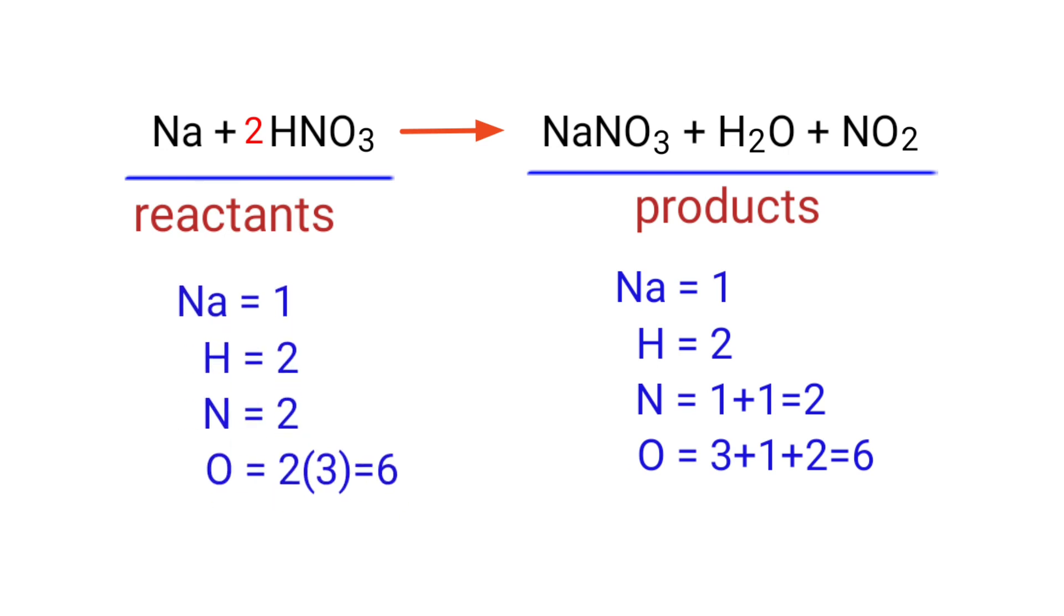The equation is now balanced. There are 1 sodium atom, 2 hydrogen atoms, 2 nitrogen atoms, and 6 oxygen atoms on both sides.